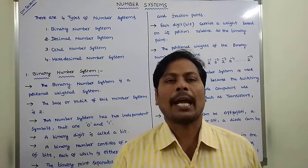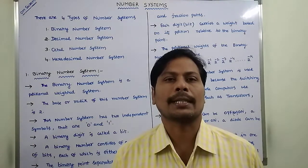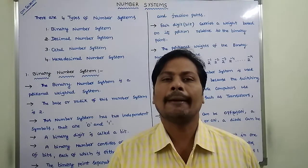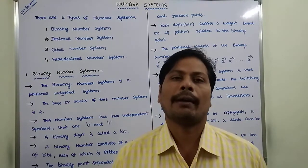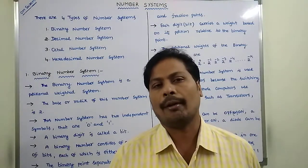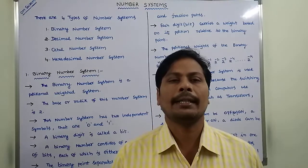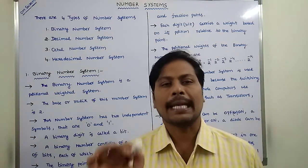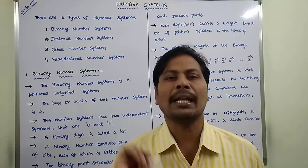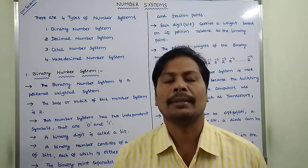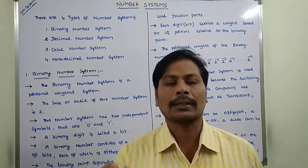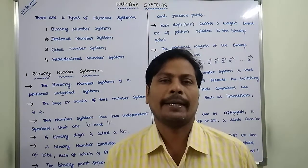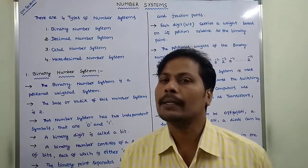Generally, there are four types of number systems used in digital logic design. The first is the binary number system, the second is the decimal number system, the third is the octal number system, and the fourth is the hexadecimal number system.